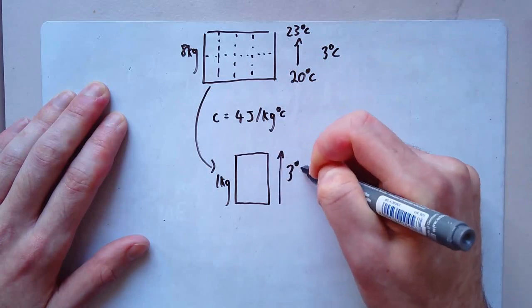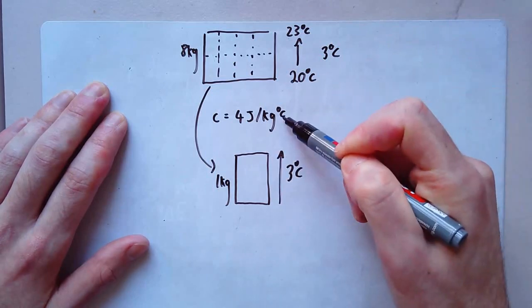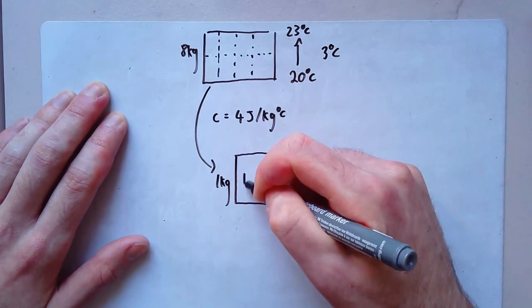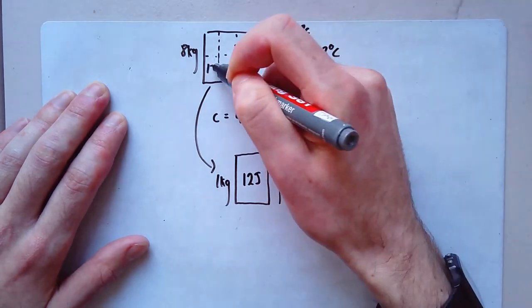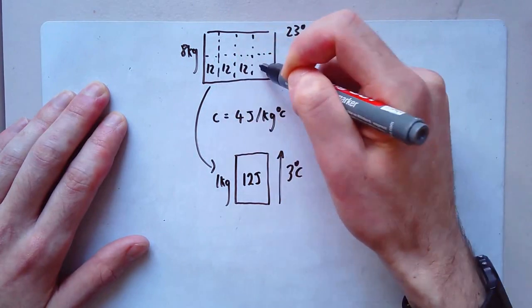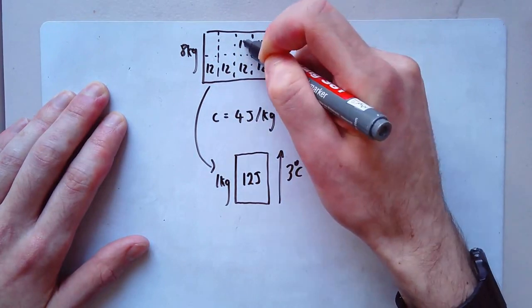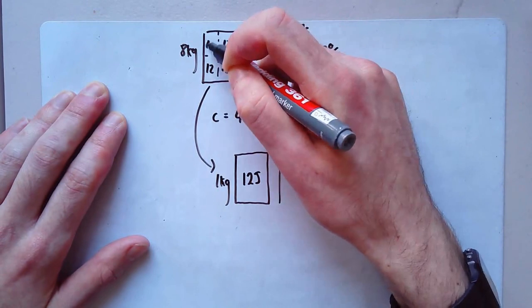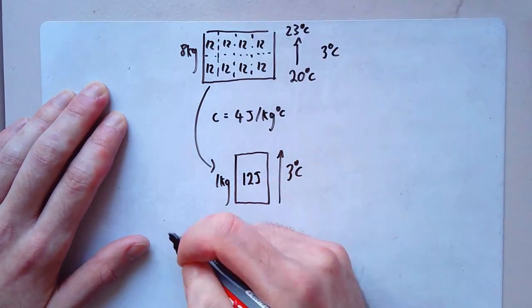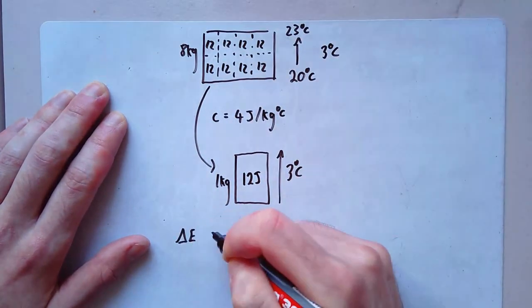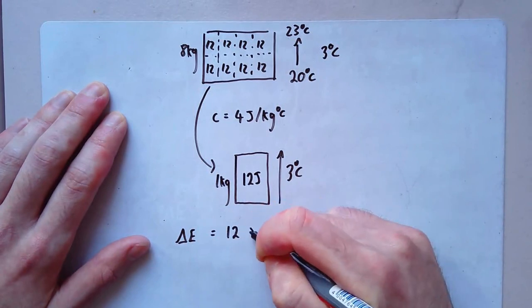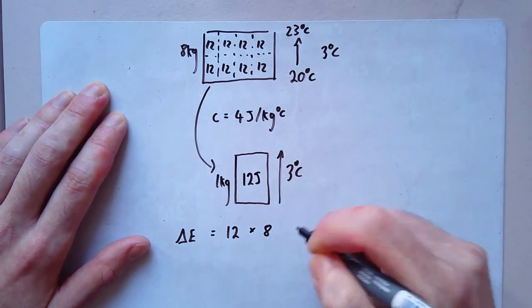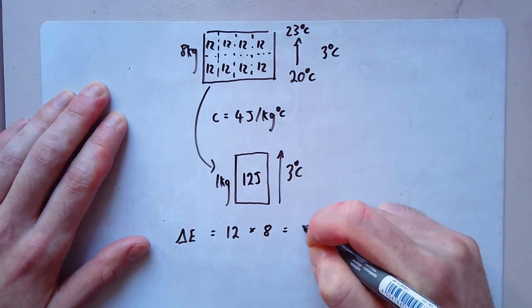So if I were to pull this particular box out, this box is one kilogram. For every degree of increase, it requires four joules. I want to increase it by three degrees C. Now, if every degree requires four joules overall, that's going to be 12 joules. So each of these is going to be 12.